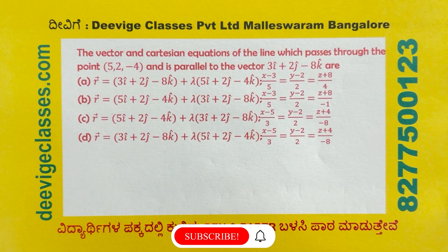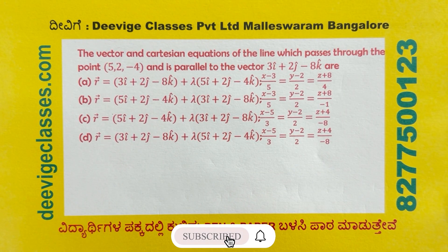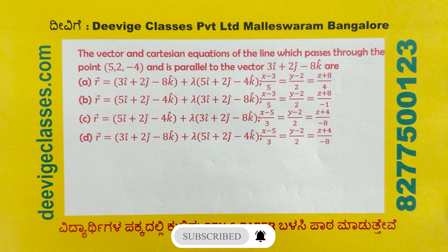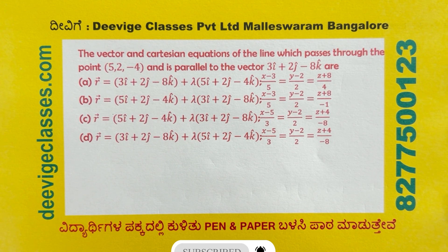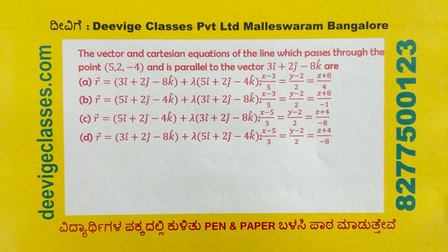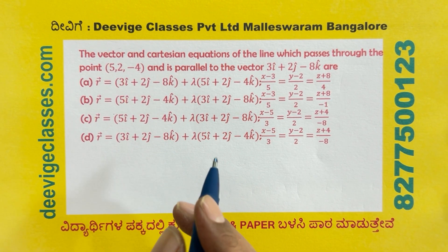The vector and Cartesian equation of the line which passes through the point (5, 2, minus 4) and is parallel to the vector 3i-cap plus 2j-cap minus 8k-cap. It is very simple. First, the vector form.